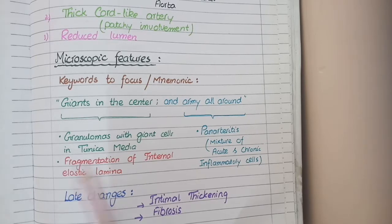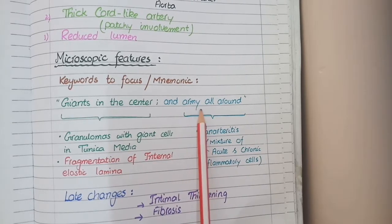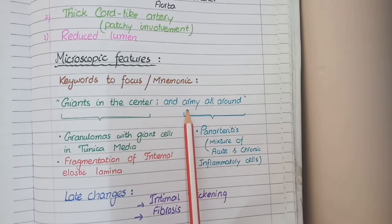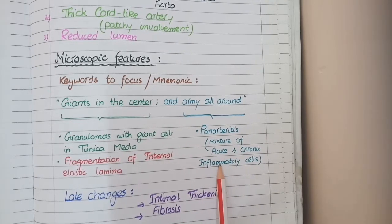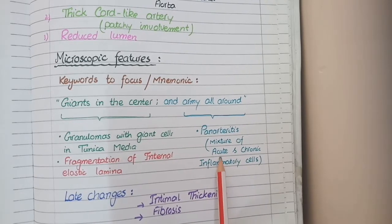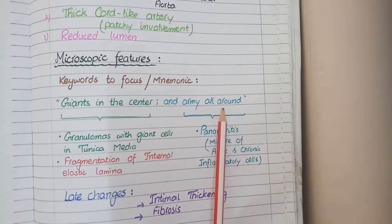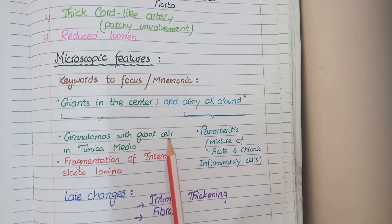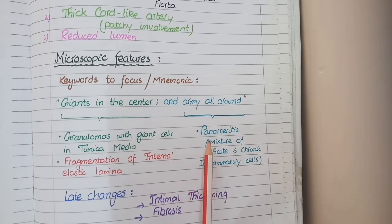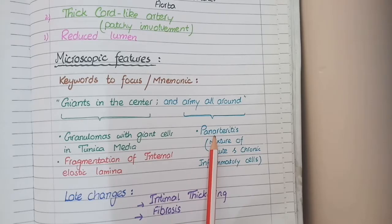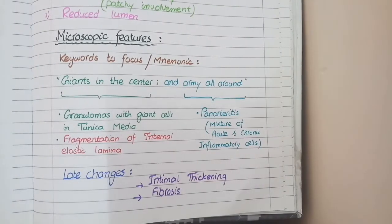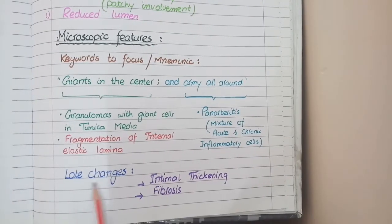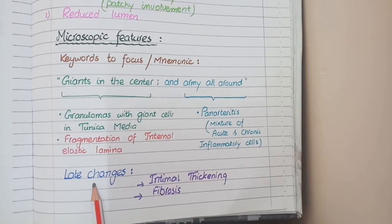The second keyword phrase is 'army all around.' This army denotes a mixture of both acute and chronic inflammatory cells, and 'all around' means it is present in all layers of the vessel. Such a pattern involving all layers of vessels is known as panarthritis.